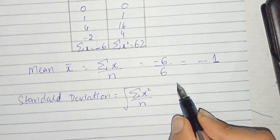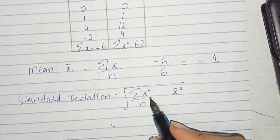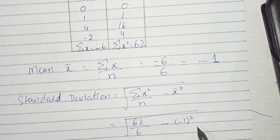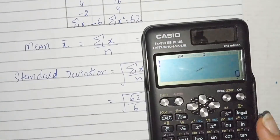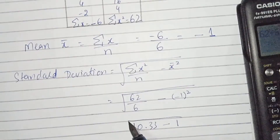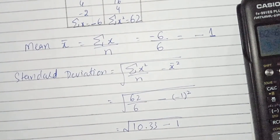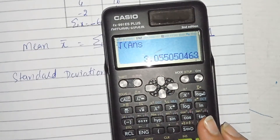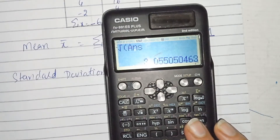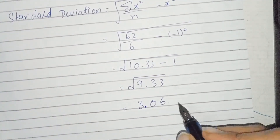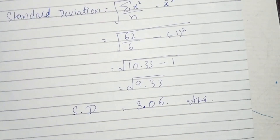Standard deviation = sqrt(sigma x squared / n − mean squared) = sqrt(62 / 6 − (−1) squared) = sqrt(10.33 − 1) = sqrt(9.33) = 3.05. You can round this to 3.06. This is the standard deviation for part C and the question is now solved.